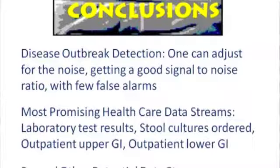In conclusion, in disease outbreak detection it is critically important to adjust for noise to minimize false alarms and achieve a good signal-to-noise ratio. This can be done, but it depends on the data source. Thank you very much.